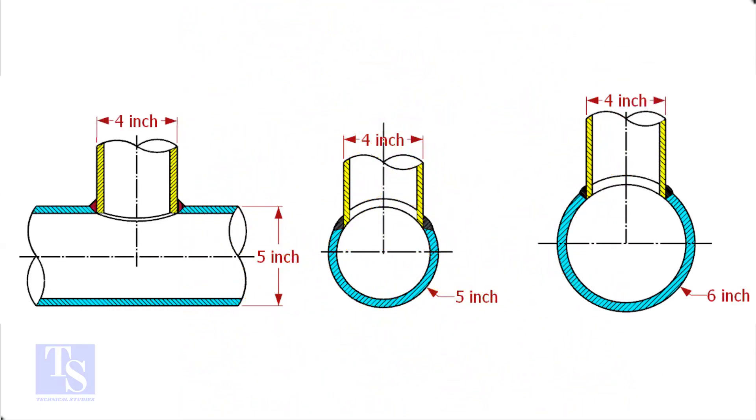In the case of stub-in connections, the branch pipe size is one or more units less than the header size. Suppose both the header and the branch size are the same, a stub-in connection is not possible.